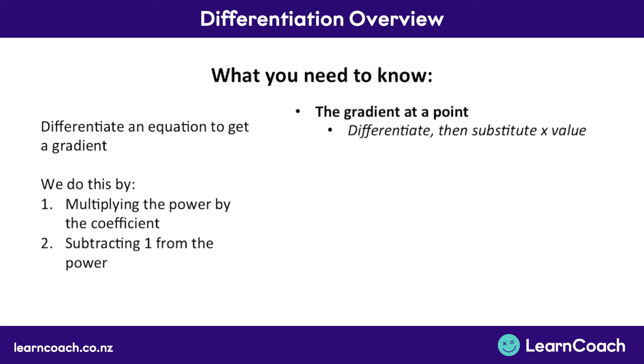That's the gradient at a point. To do that, you differentiate and substitute in the x value at that point. The second thing we learned was about stationary points. These are points where the gradient equals zero, so after you've differentiated, you need to set your gradient equation or your gradient function to equal zero. Then you can solve it.